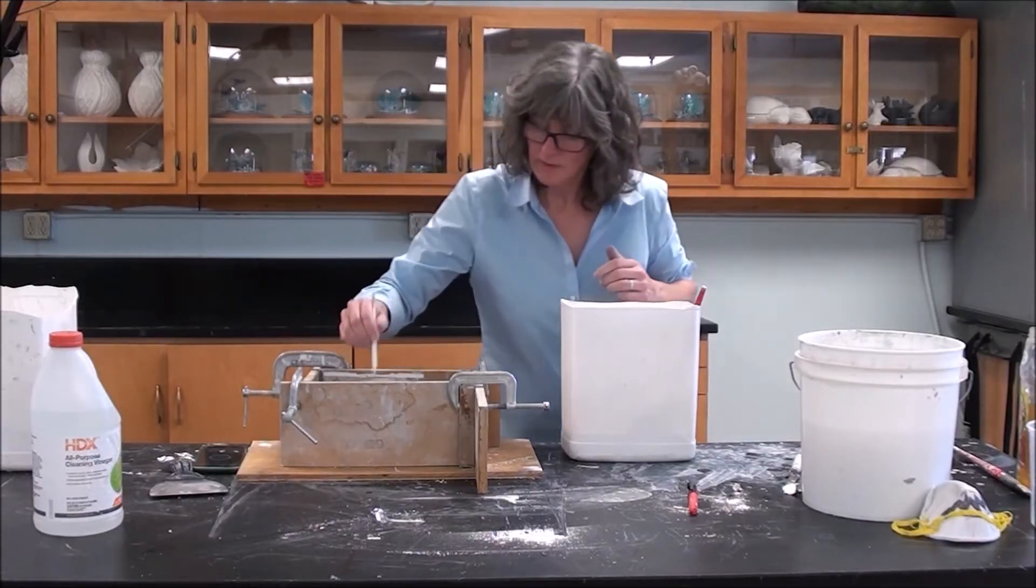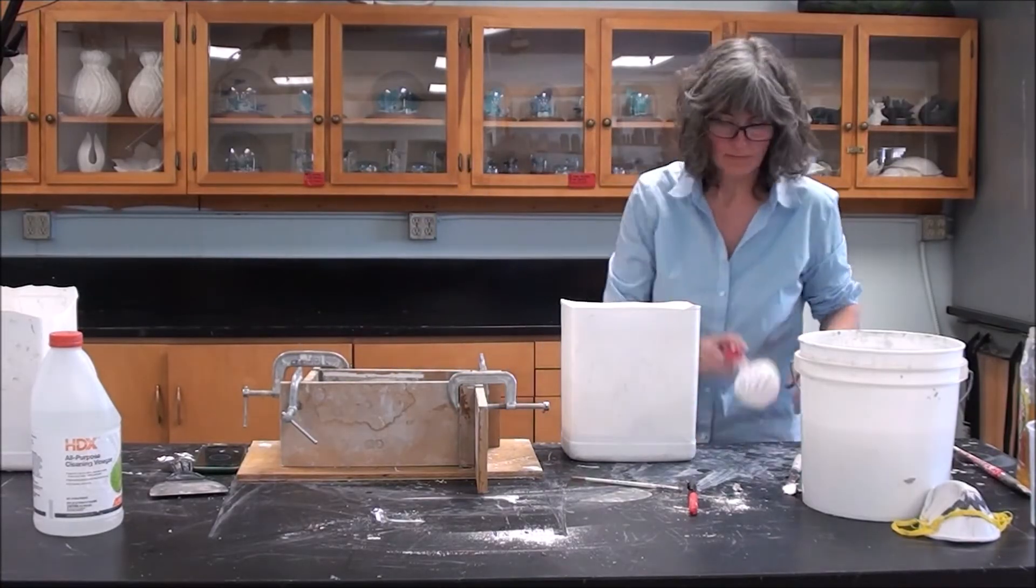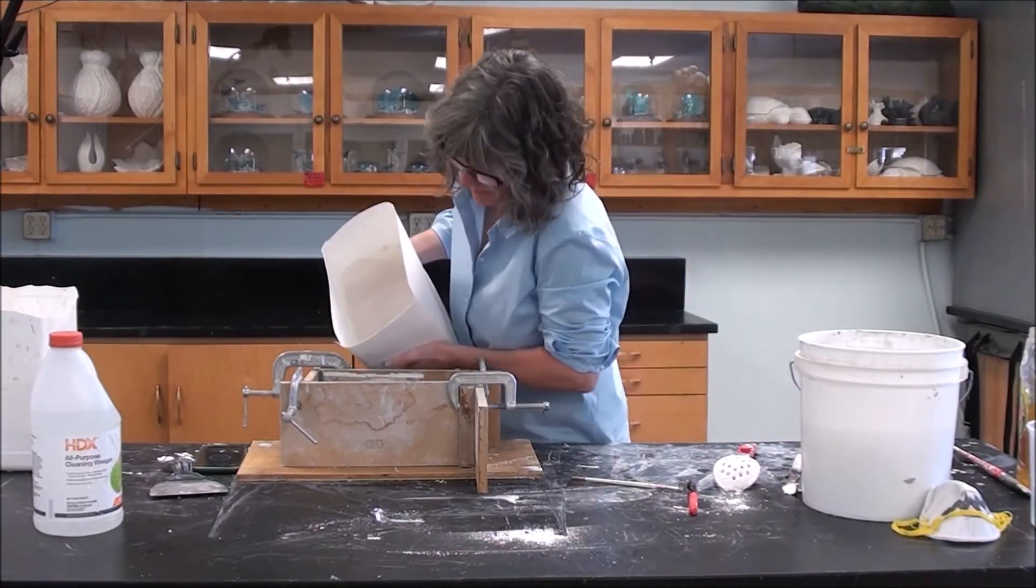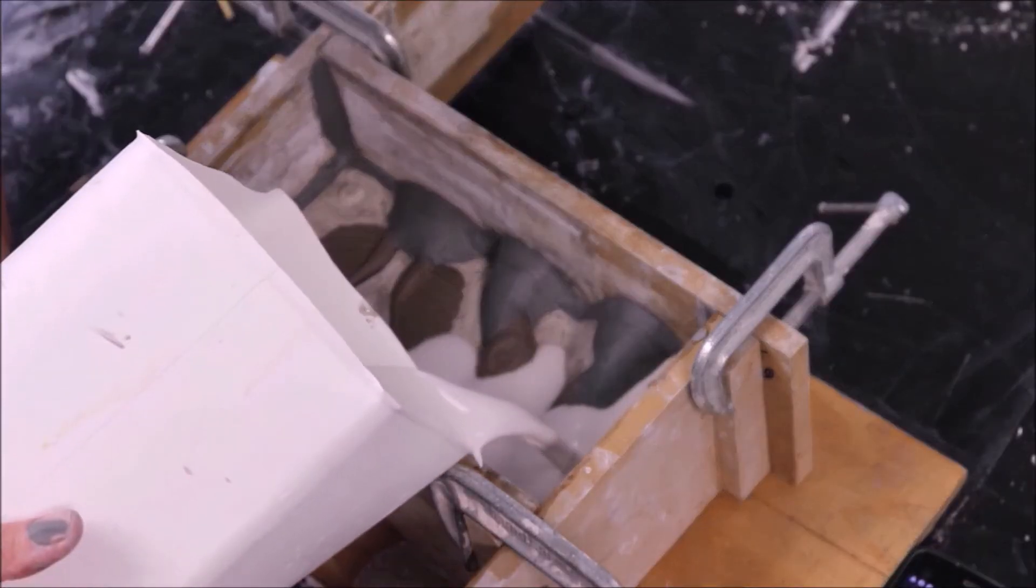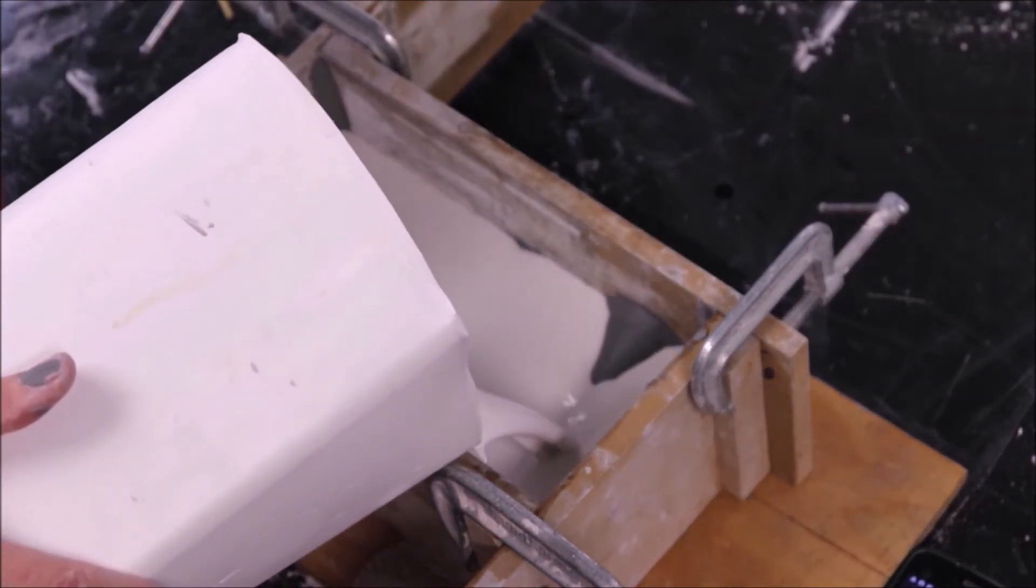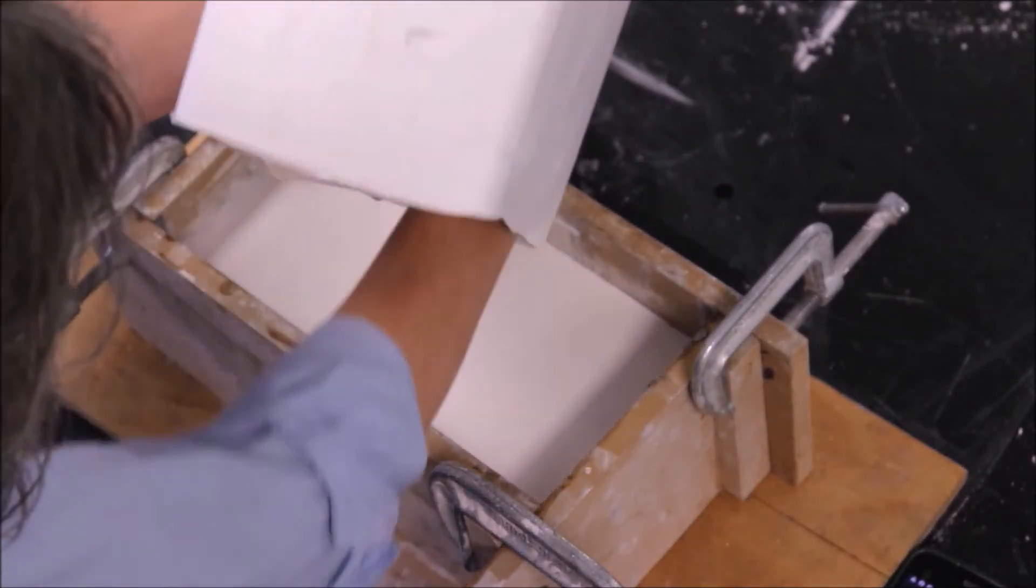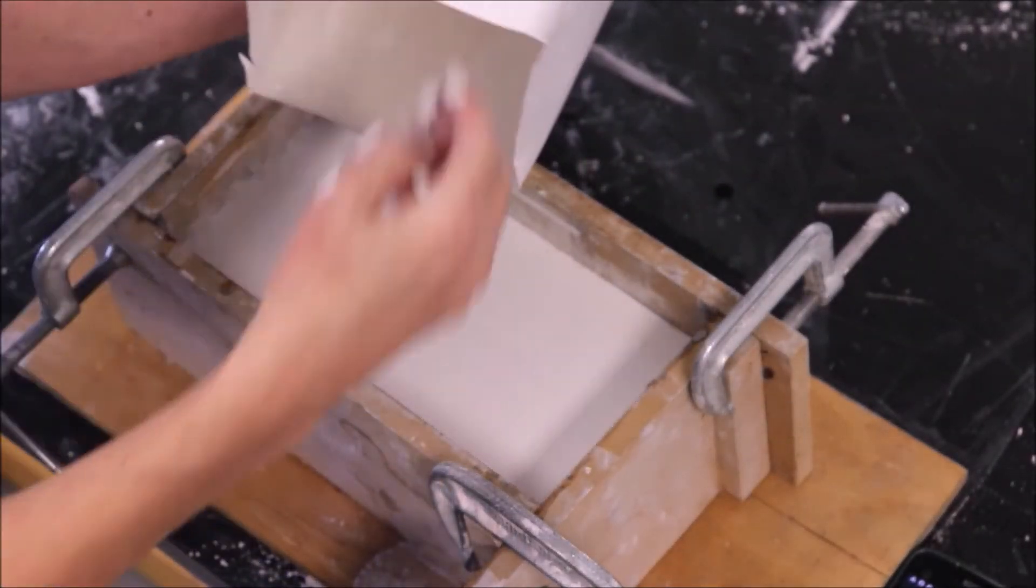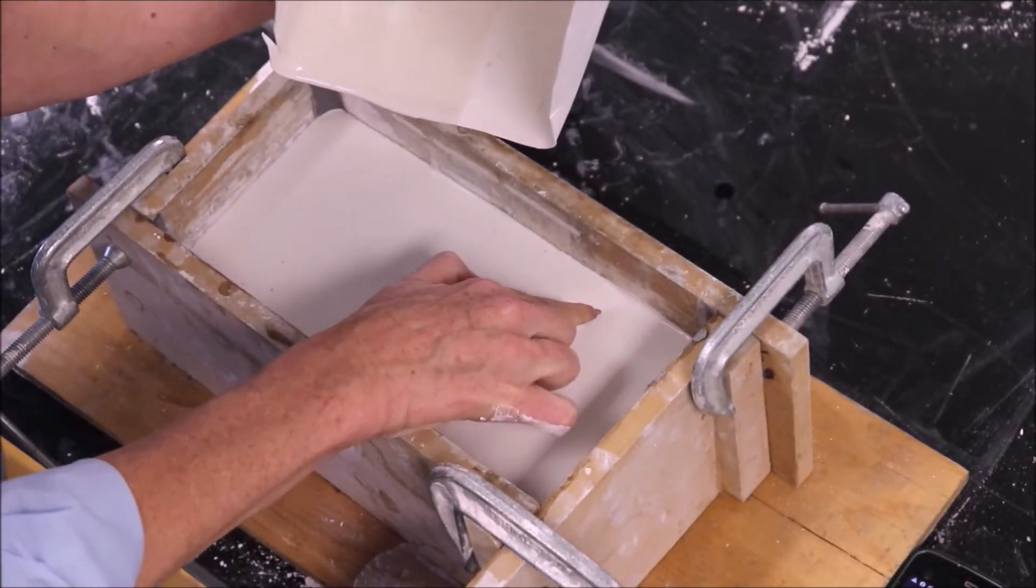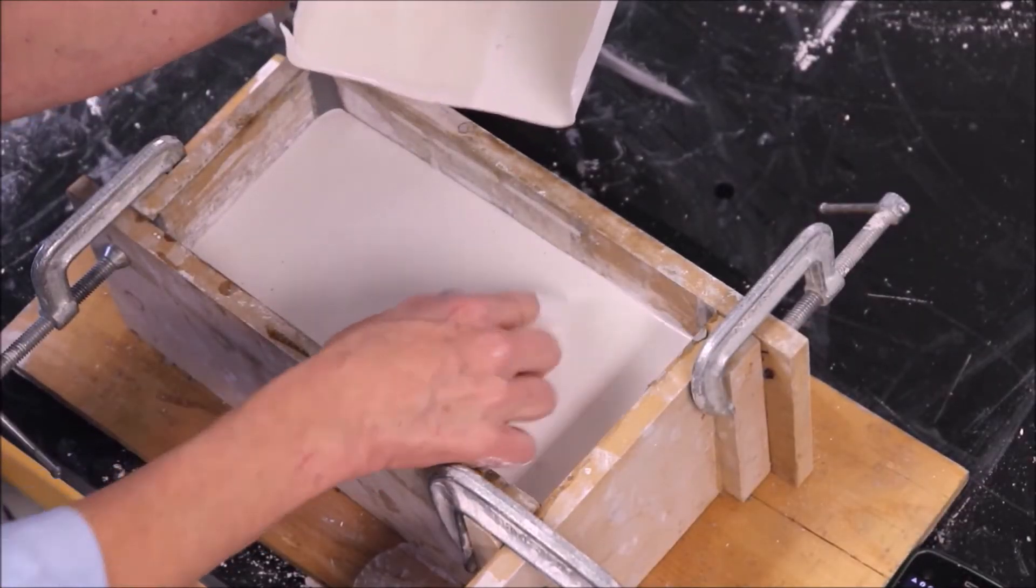So, the next question is, well, what happens if I miscalculated and I didn't create enough plaster? Well, that's not that big of a deal. Plaster loves itself and so you can just mix up more plaster and pour it right on the top. So, you can do that while the plaster is still wet. If you want, you can even wait until the plaster sets up and dries.